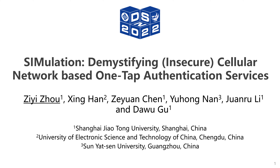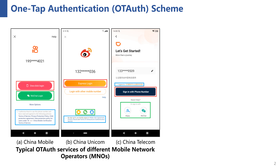In this work, we focus on a recently emerged authentication scheme on mobile platform. This authentication scheme is called One-Type Authentication and is widely used by mobile apps. One-Type Authentication is essentially a third-party-based authentication scheme supported by mobile network operators. It is similar to other login options such as Single Sign-On.